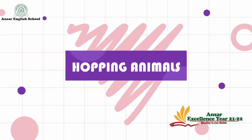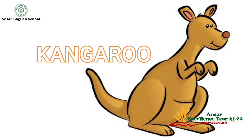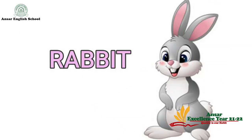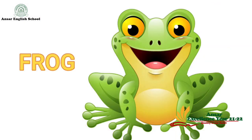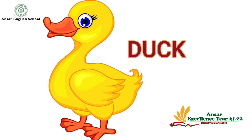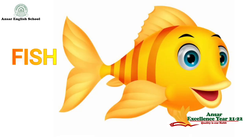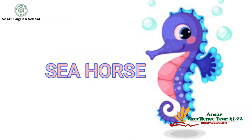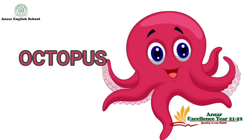Hopping animals: kangaroo, rabbit, frog. Swimming animals: duck. Children, duck can swim as well as walk. Other examples for swimming animals: fish, dolphin, seahorse, octopus.